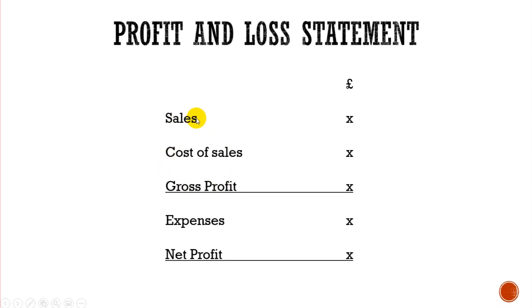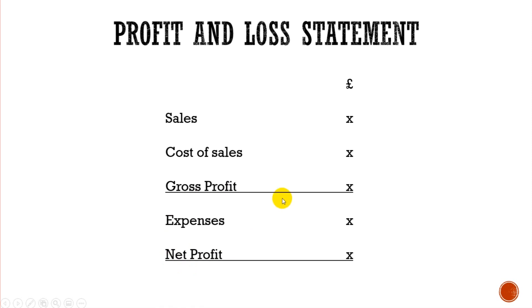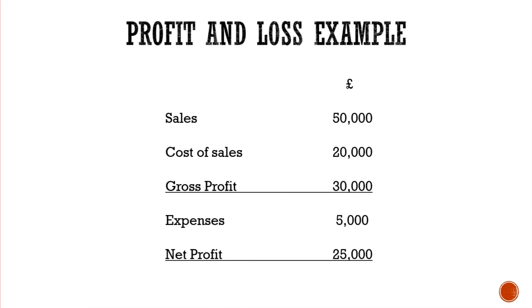So gross profit is sales minus cost of sales, whereas net profit is gross profit minus expenses — or in other words, sales minus all the outgoings equals net profit. Sometimes you'll hear about gross profit margin or net profit margin. That's just referring to gross profit and net profit, sometimes shown as a percentage, which we'll look at on the next slide.